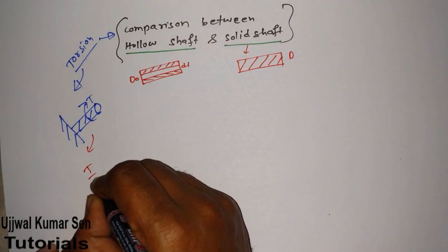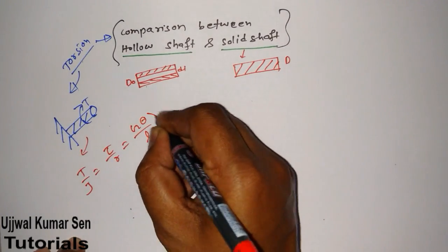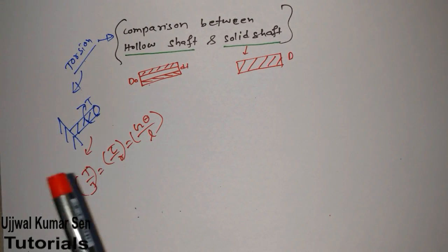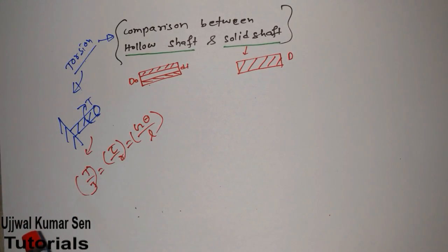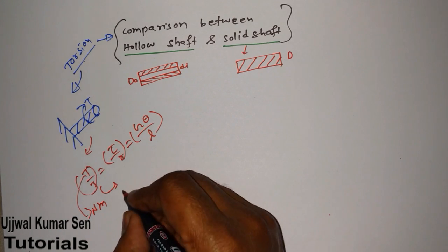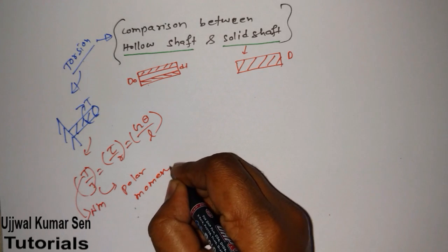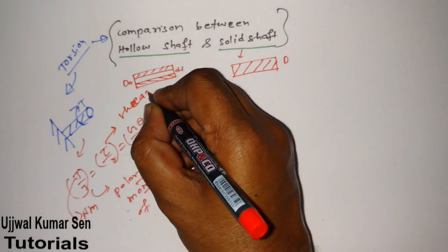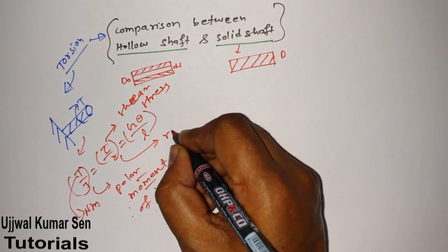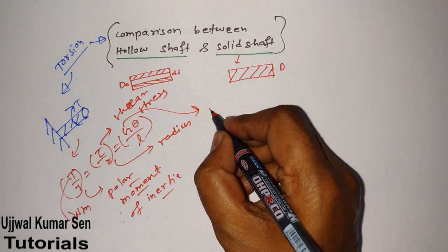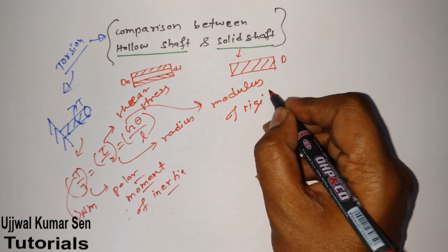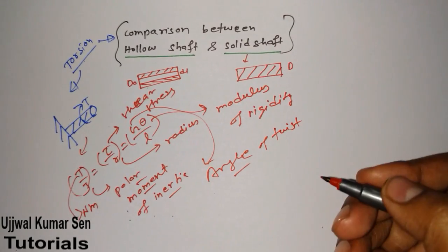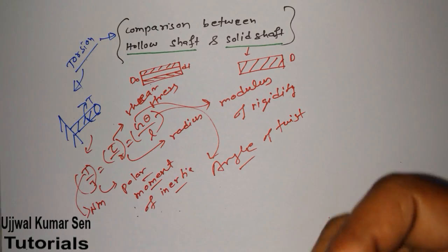Based on the torsion equation we are going to do the comparison. The torsion equation is: T/J = τ/r = Gθ/L. Here T means torque (unit: Newton meter), J means polar moment of inertia, τ means shear stress, r means radius of the shaft, G means modulus of rigidity, and θ means angle of twist.